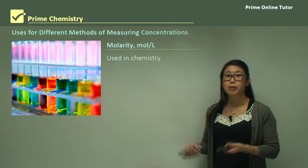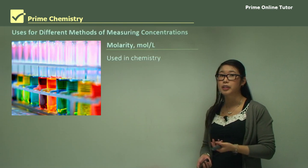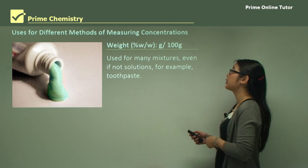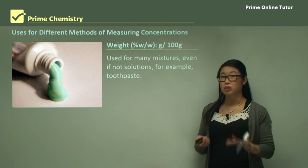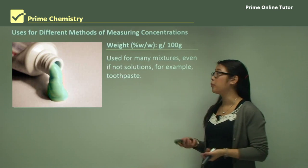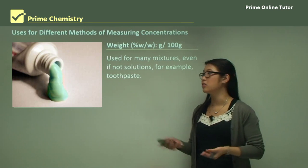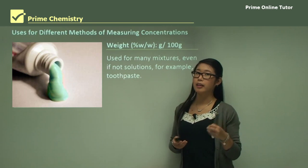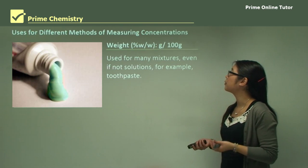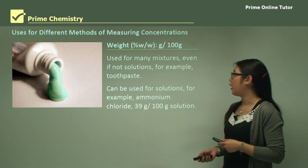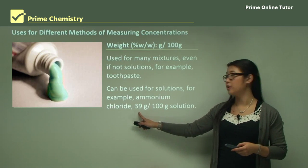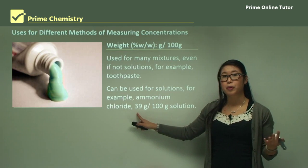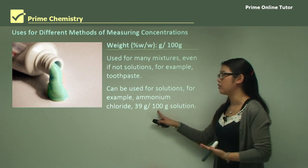Other units include molarity, which we already discussed in the previous lesson — mainly used in chemistry because we're looking at moles. Also weight percentage: for any mixtures that are not solutions, like toothpaste, we usually use weight-to-weight percentage. For example, 39 grams of ammonium chloride in 100 grams of a paste-like mixture.